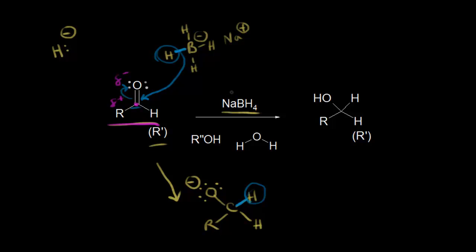The reason we need something like sodium borohydride is because you couldn't use something like sodium hydride by itself, because hydride by itself is not a great nucleophile — it's a good base. The orbital is too small to interact well with the carbonyl carbon, and so that's why we need a hydride transfer agent, something like sodium borohydride.